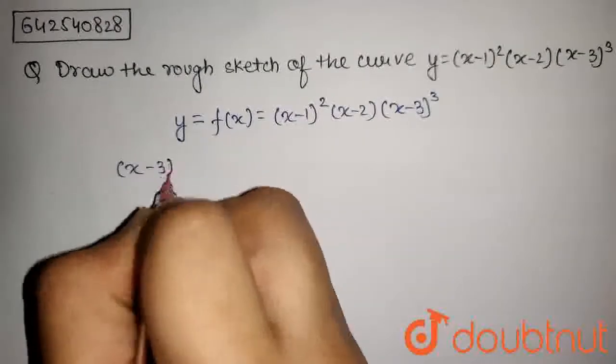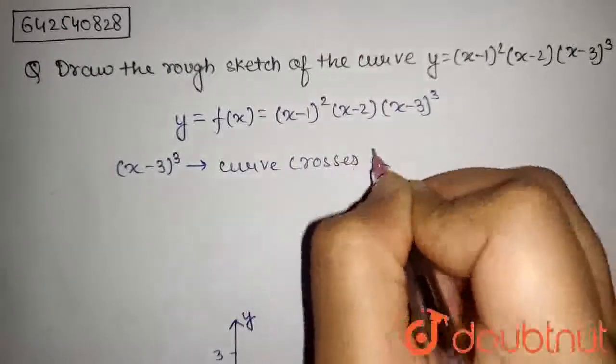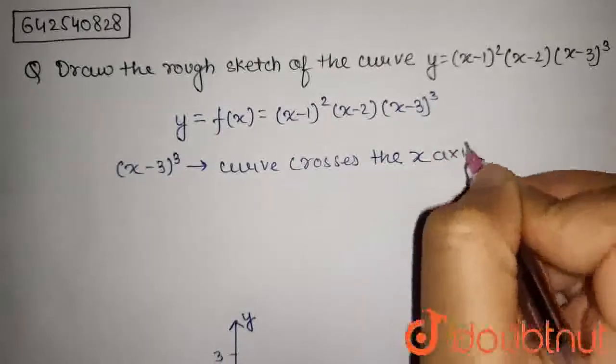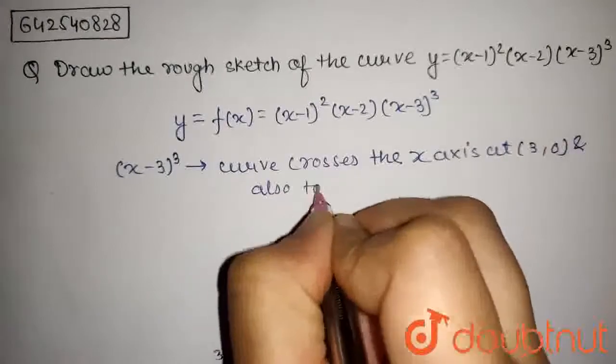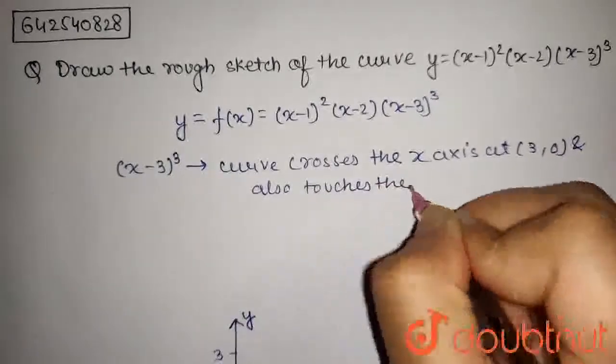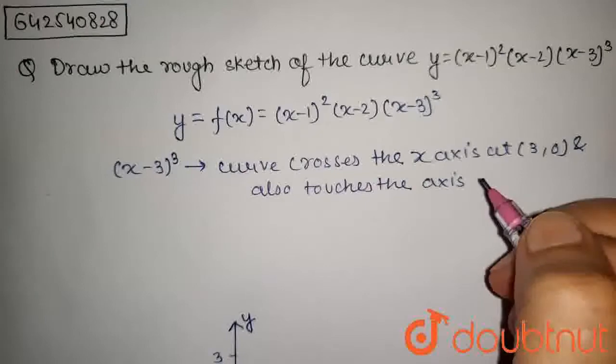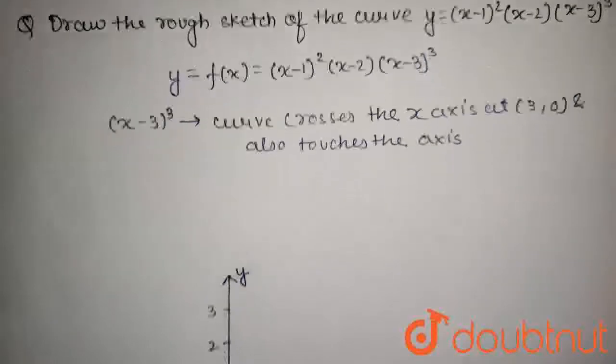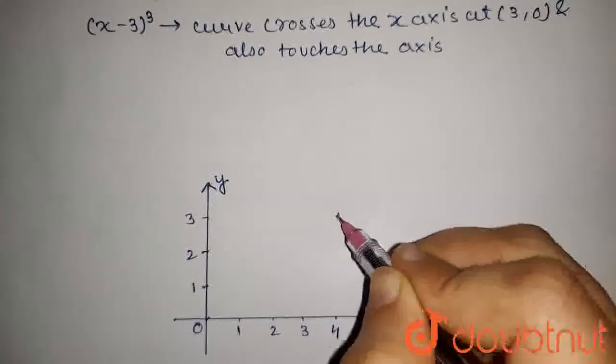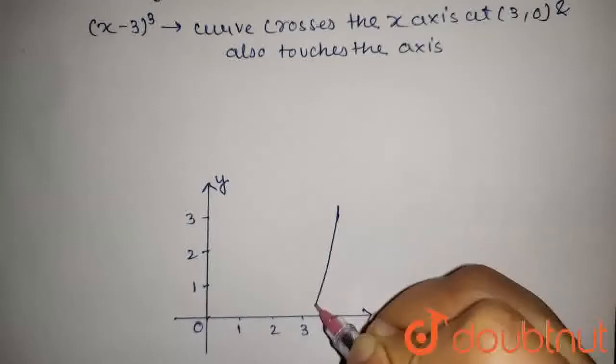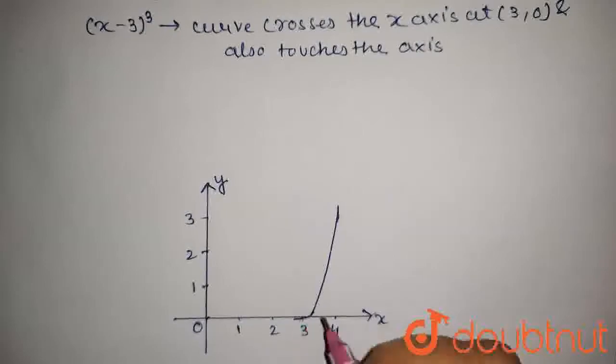x minus 3 whole cube curve crosses the x-axis at 3 comma 0 and also touches the x-axis. So, its graph will be started from this and then crosses and touches. So, it will be like this.